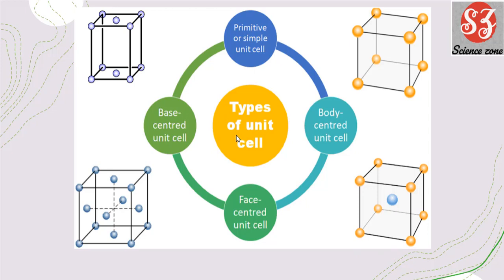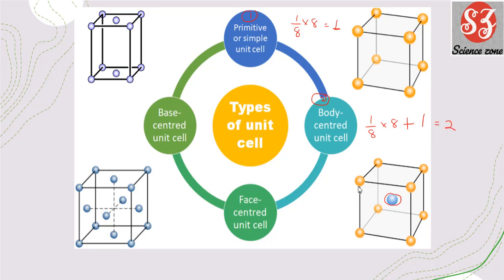Now, types of unit cell. There are basically four types. The first is the primitive or simple unit cell, in which atoms are present only at the corners. Each corner has one-eighth of an atom, and there are eight corners, so total atoms = 1/8 × 8 = 1. The second is the body-centered unit cell, in which atoms are present at corners plus one atom at the body center. So total = (1/8 × 8) + 1 = 2 atoms.